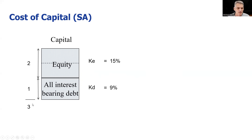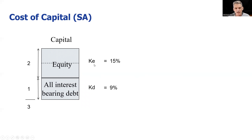If we add these together, we're going to get a total value of three. This enables us to see that debt represents one lot out of three — in other words, one third — and equity represents two lots out of three. We need to know the percentage, and once we've got that, we can put this together in the form of our weighted average cost of capital.